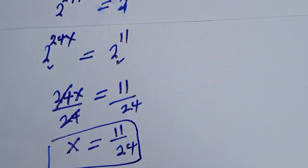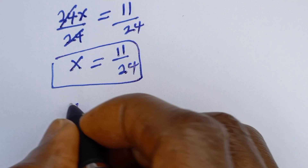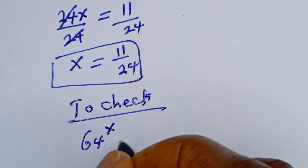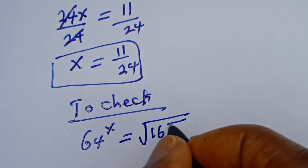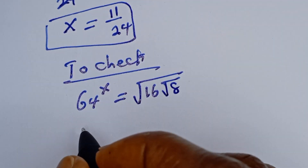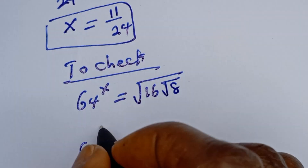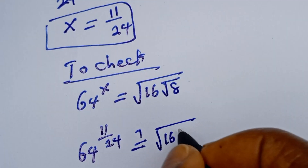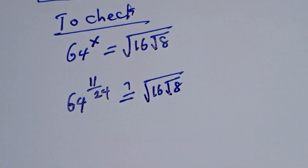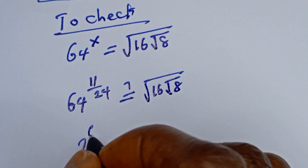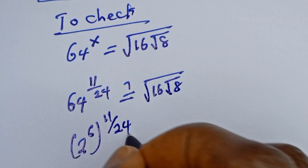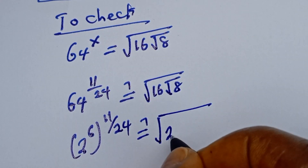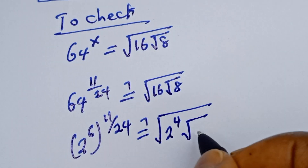Let's check to confirm if this answer is right. We substitute back into the original equation: 64 to the power of s, with s = 11/24. This becomes 2 to the power of 6 times 11 over 24, which simplifies. The right-hand side: square root of 16 written as 2 to the power of 4, and square root of 8 written as 2 to the power of 3.